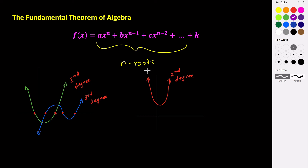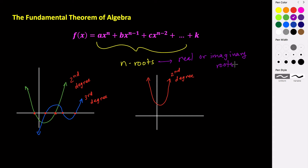The answer is actually no, because when we're talking about the fundamental theorem of algebra and having n roots, these n roots are not restricted to be real roots. All the cases where the polynomial crosses the x-axis — those are all real zeros. But the n roots do not have to be real zeros; the roots could be real or imaginary. So although this is a second degree polynomial that has no real roots, it does have two imaginary roots.